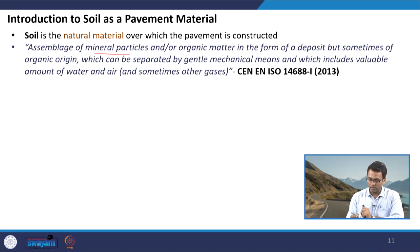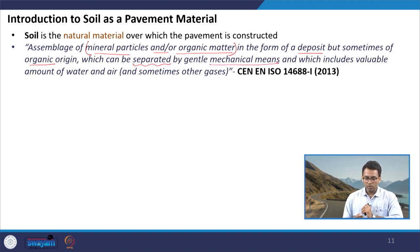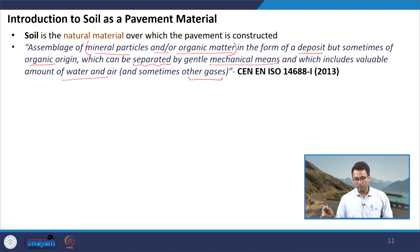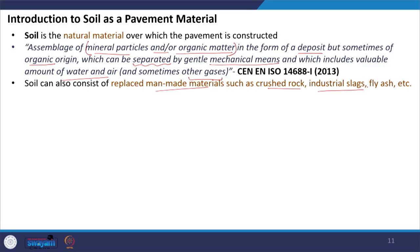If you see the definition given in CN EN ISO 14688, soil is an assemblage of mineral particles and/or organic matter in the form of deposit, which can be separated by gentle mechanical means, and which includes variable amounts of water and air, and sometimes other gases. This tells us that soil basically consists of minerals, it can consist of organic matter, it appears as a bulk but can be separated through mechanical forces, and it contains certain amounts of water and air. In addition to natural soil, it can also consist of replaced man-made materials, for example crushed aggregates, crushed rock, industrial slags, or fly ash.